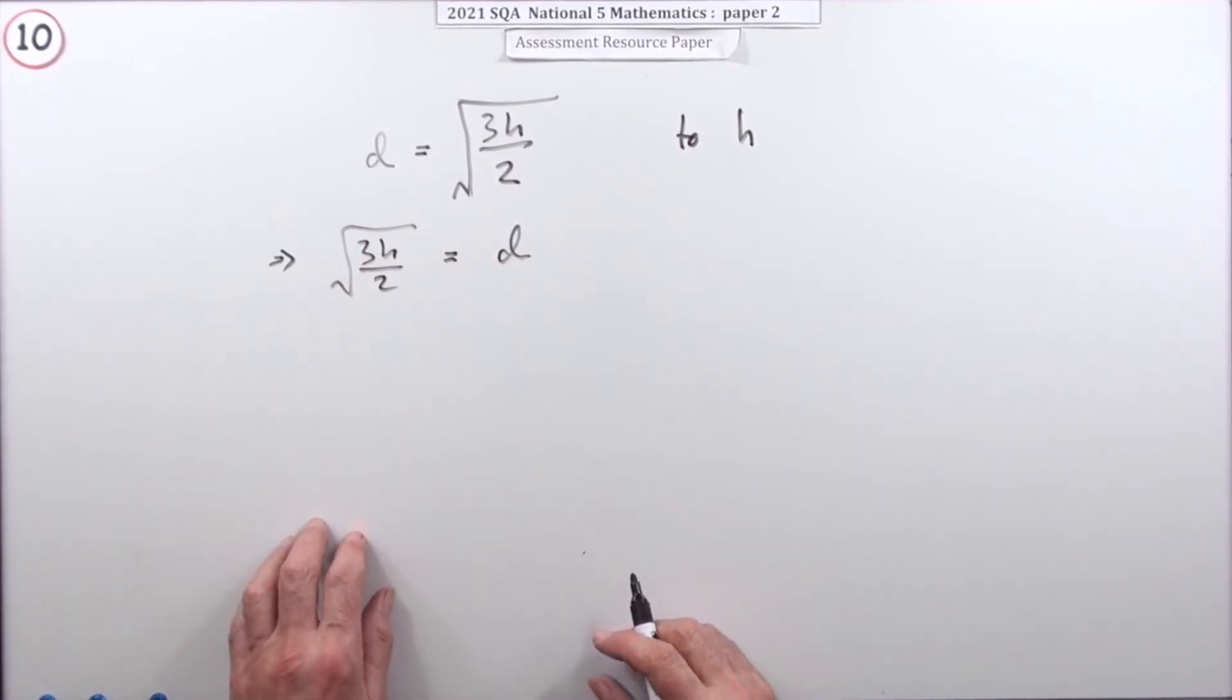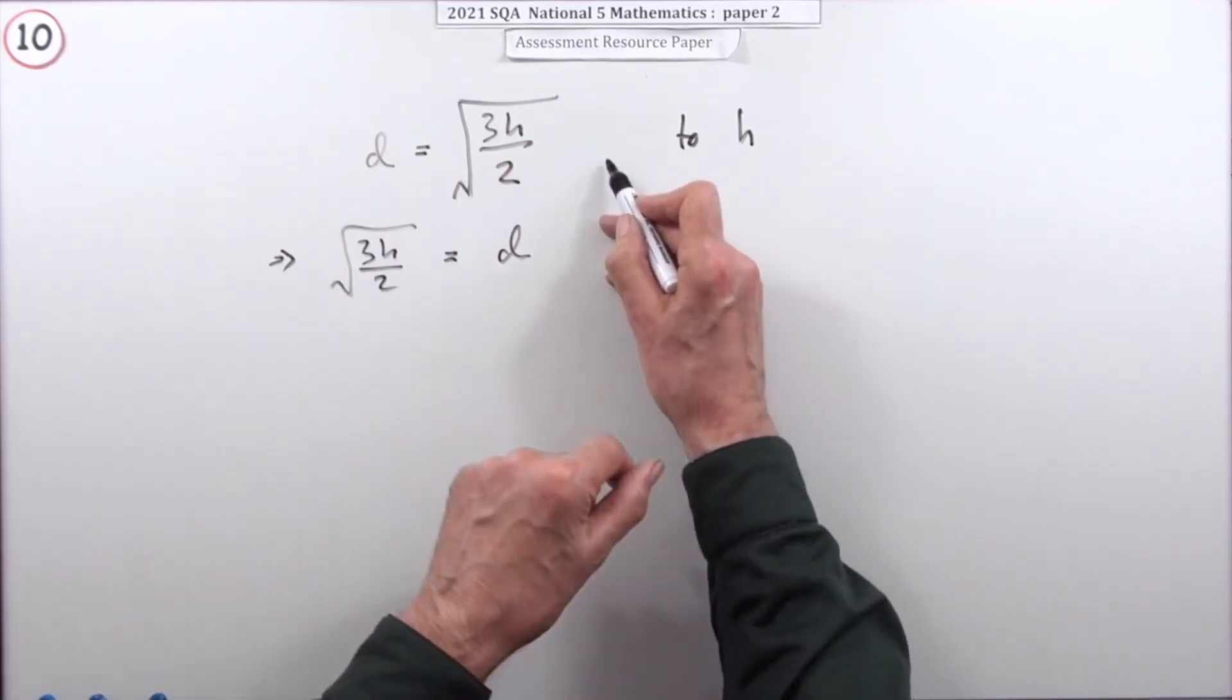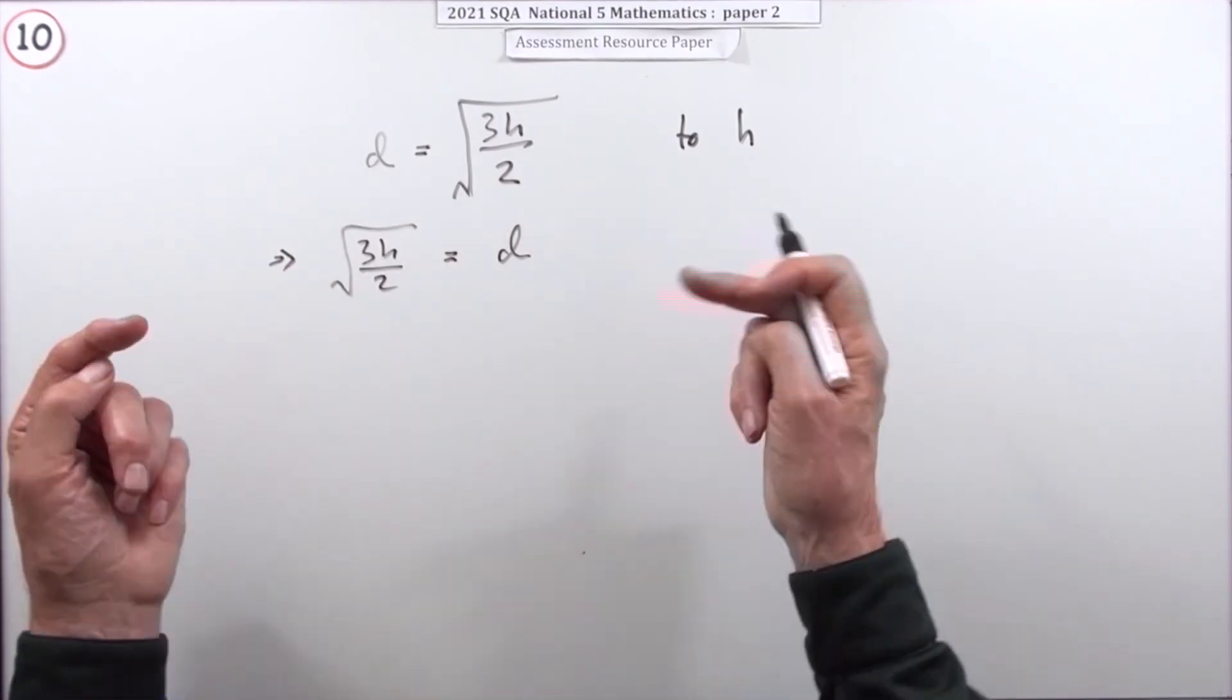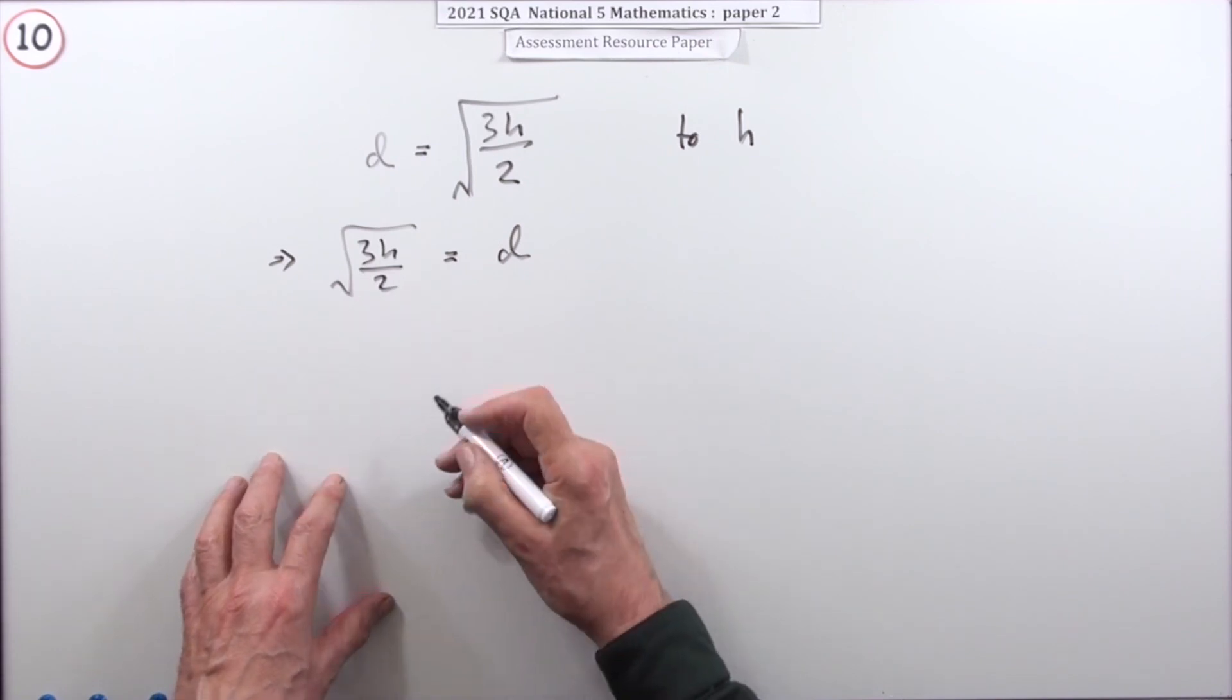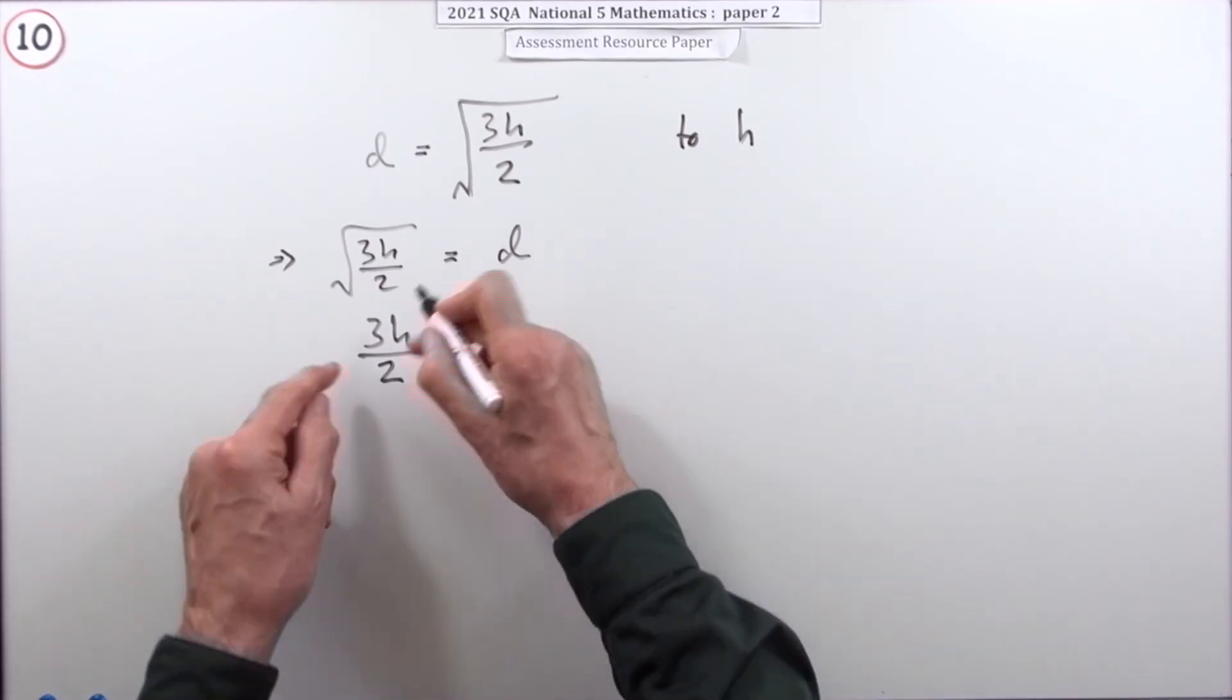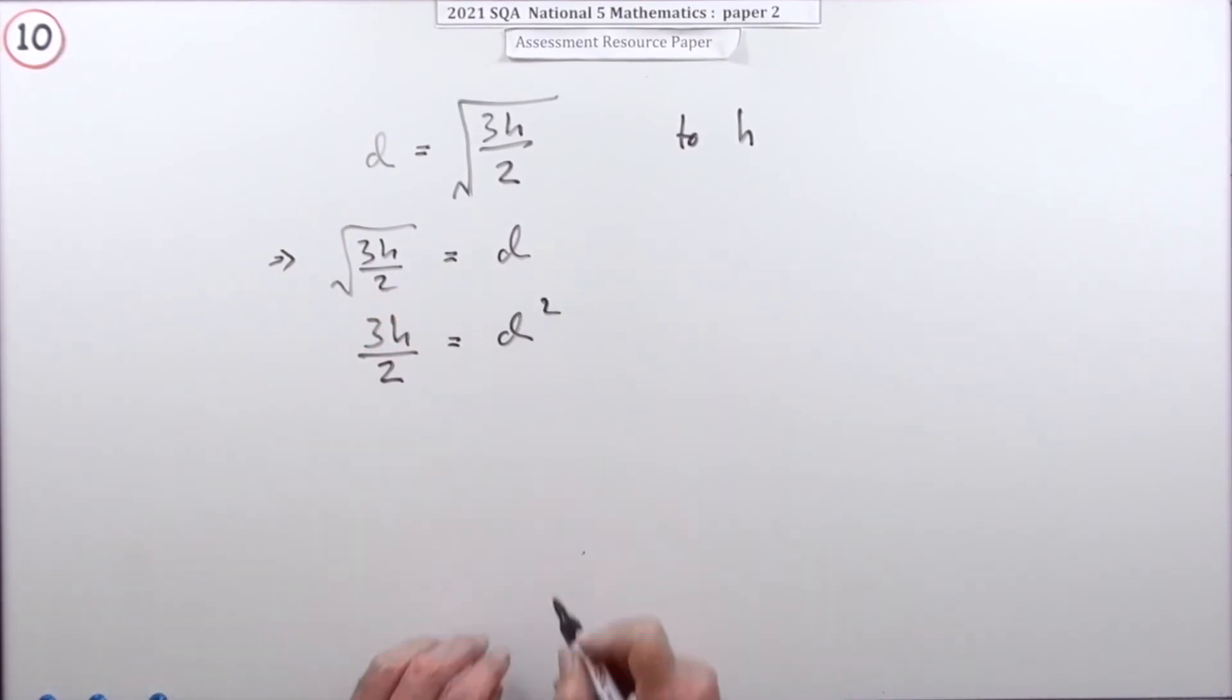Just to get h on that side, unless h was in the denominator or being subtracted, then I'd leave it because it would come over naturally. Writing it that way doesn't get you anything. So first step: get rid of that square root - square both sides. Squaring that side rehydrates its innards, and squaring this side gives you d squared. That gives you a mark.